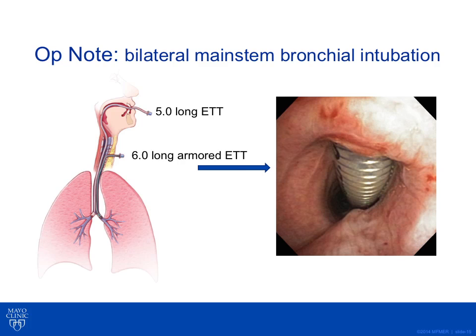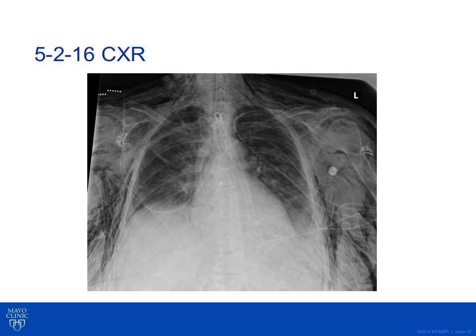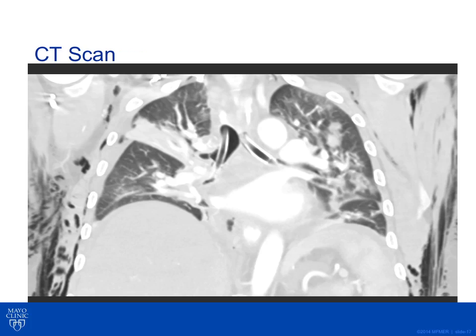The diagram clearly shows the posterior membranous tear on the trachea extending just below where the tracheostomy-placed endotracheal tube began all the way down to the carina. The chest X-ray obtained one day after surgery clearly shows continued subcutaneous emphysema; however, the endotracheal tubes can be seen in proper placement into the mainstem bronchi. The lungs are well inflated, there is no pneumothorax, and the pneumomediastinum is markedly decreased.